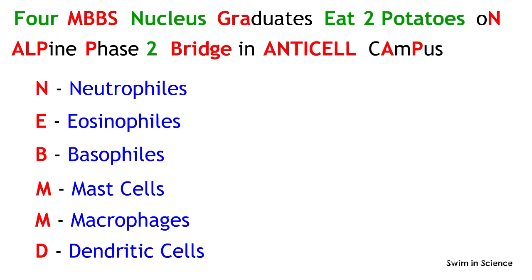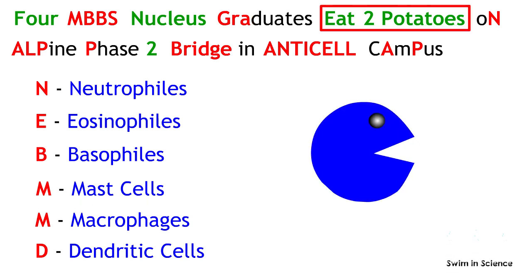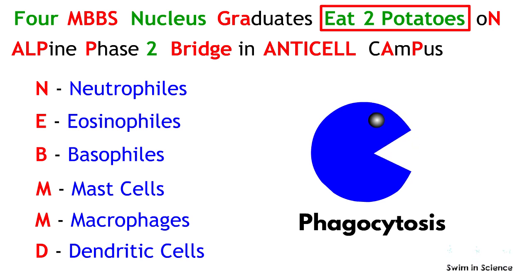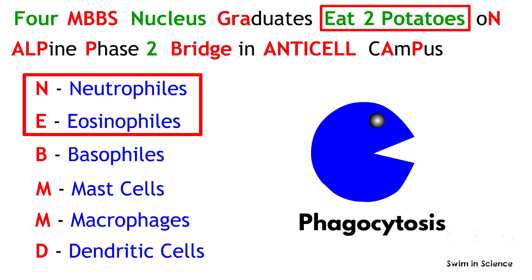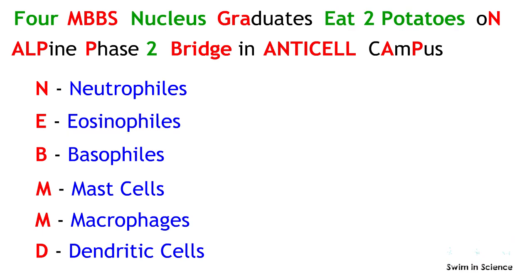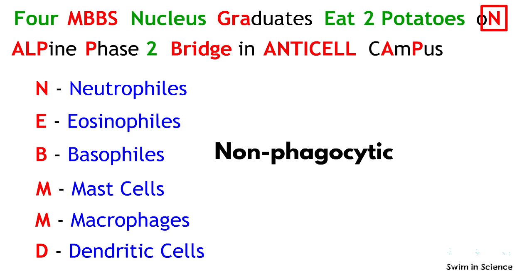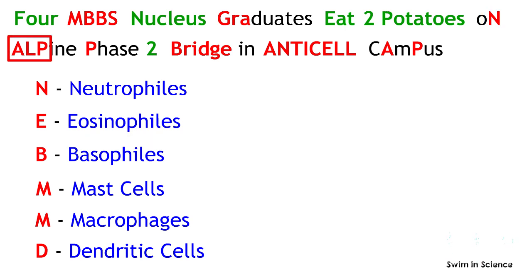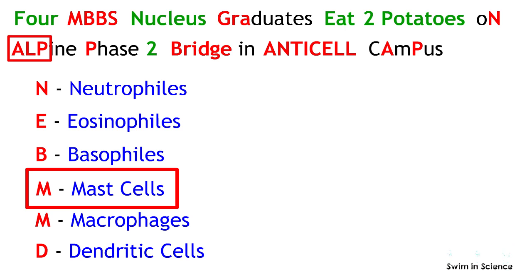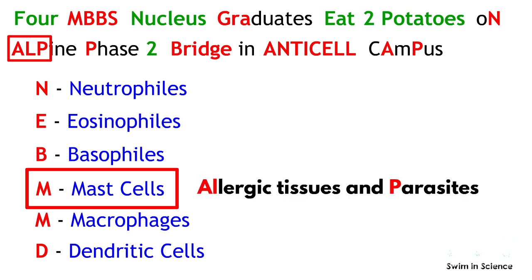Now let us see what 'eat two potatoes' means. Eating means phagocytosis, and two potatoes means the first two cells — that is, neutrophils and eosinophils — are phagocytic in nature. N represents the non-phagocytic nature of basophils, and ALP indicates that mast cells are active against many allergic tissues and parasites.